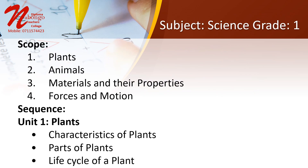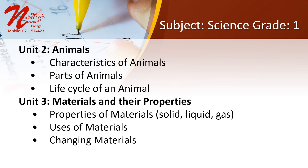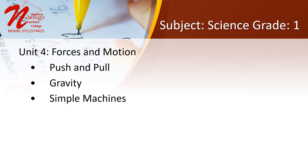Subject: Science, Grade 1. Scope: 1. Plants, 2. Animals, 3. Materials and their properties, 4. Forces and motion. Sequence — Unit 1: Plants — characteristics of plants, parts of plants, life cycle of a plant. Unit 2: Animals — characteristics of animals, parts of animals, life cycle of an animal. Unit 3: Materials and their properties — properties of materials (solid, liquid, gas), uses of materials, changing materials. Unit 4: Forces and motion — push and pull, gravity, simple machines.